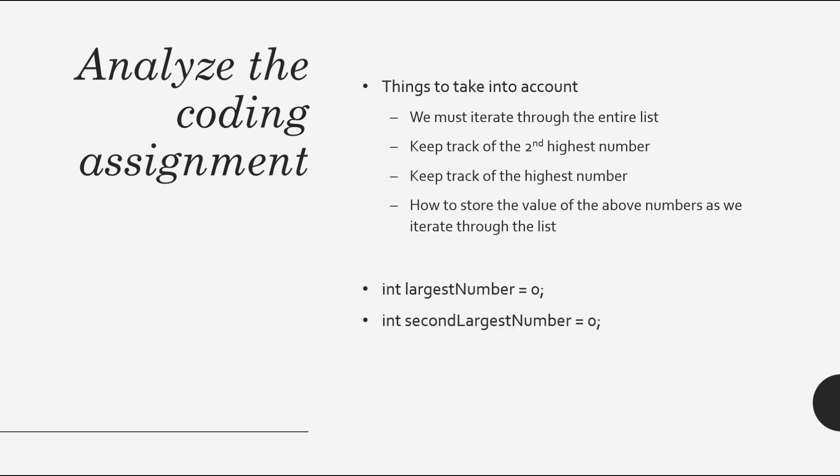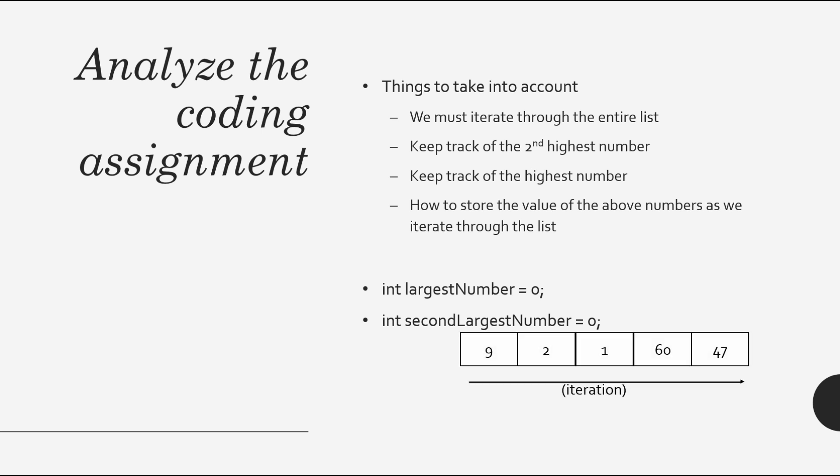So let's say we have two variables here. The largest number variable is going to be set initially to zero, and the second largest variable is also going to be set to zero. Let me walk you through this in presentation form. We have an array list and I'm going to walk you through how we would calculate the largest and the second largest number. This is our array and we are iterating through it with a loop.